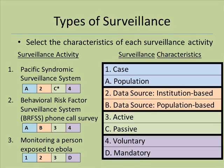Slide 21: We can now select the characteristics of each surveillance system. For example, the Pacific Syndromic Surveillance System is a case surveillance system. Its data source is institution-based. It is passive and voluntary.